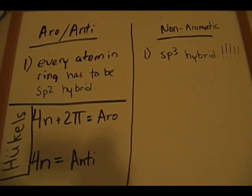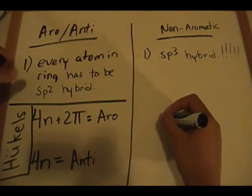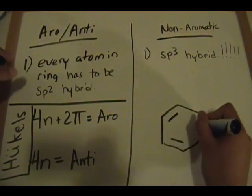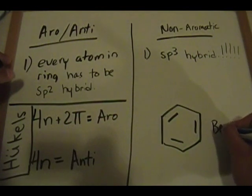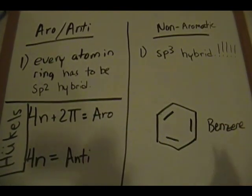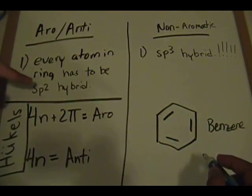There are two categories when determining if something is aromatic or not. The first thing, when dealing with these types of problems, we'll look at the most famous compound that deals with aromaticity: the benzene ring. So the first thing you want to do when you're presented with a molecule and your professor asks whether it's aromatic or not — check to see if every atom in the ring has sp2 hybridization.